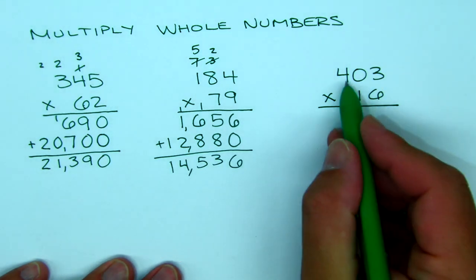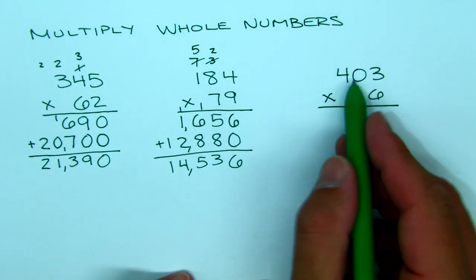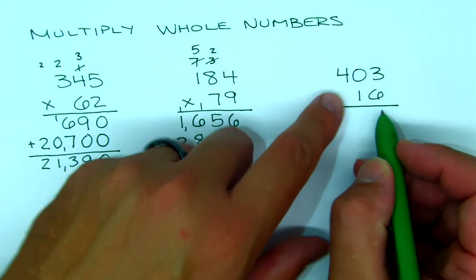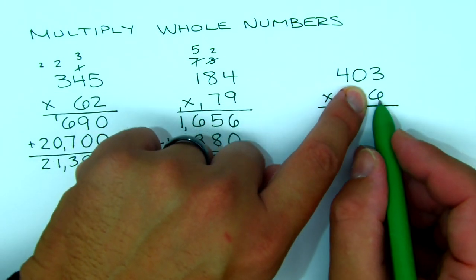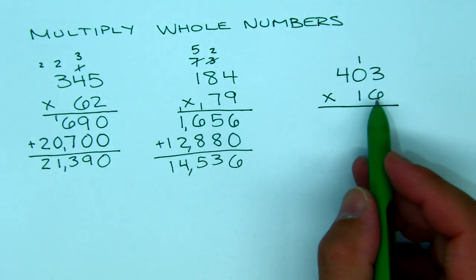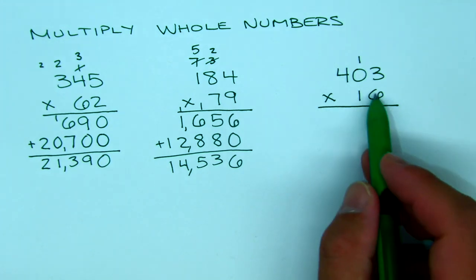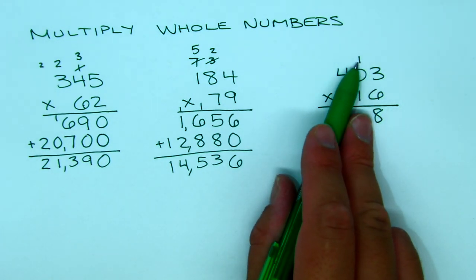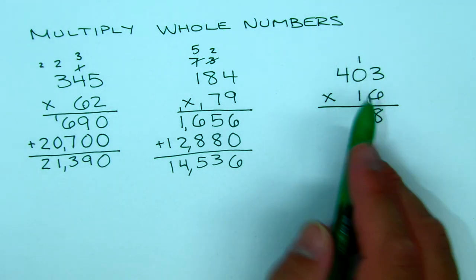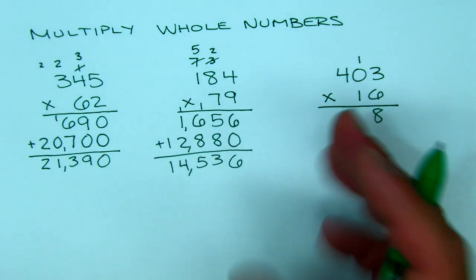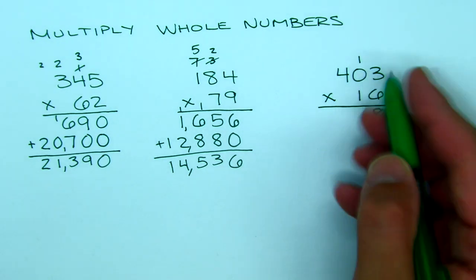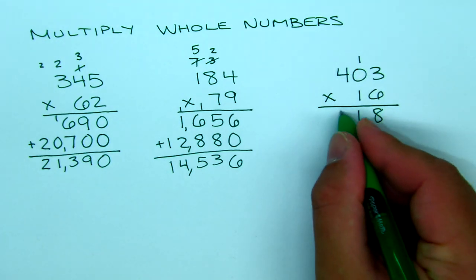All right, we're back — 403 times 16. This one's a little different because we have a 0 in the number. We break 16 into 6 and 10, ignoring the 1 for now. 6 times 3 is 18: 8 goes down, 1 goes up. A common mistake is skipping the 0, but we can't — there's a carried 1 there. 6 times 0 is 0, plus 1 is 1. The 0 is a number just like any other — we can't skip it.